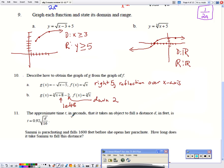Number 11. The approximate time in seconds it takes an object to fall a distance D in feet is, and we have this lovely equation. Sammy is parachuting and falls this many feet before she opens her parachute. How long does it take Sammy? Well, it says feet, and feet is the distance, and we're looking for the time. So we know it's going to be 0.92, the square root of 1600 over 16. Now, before I pick up my calculator, I know that 1600 divided by 16 is just 100. So I have 0.92, and then the square root of 100, which is 10. 0.92 times 10 is just going to be 9.2 seconds. Yay!